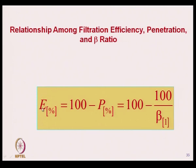Efficiency equals 100 minus penetration percent, or 100 minus (100 / beta). This is the relationship, so if we know one parameter we can derive the other parameters.